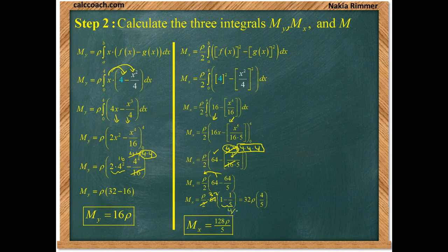And so, we have 128 rho over 5. That is the moment about the x-axis.